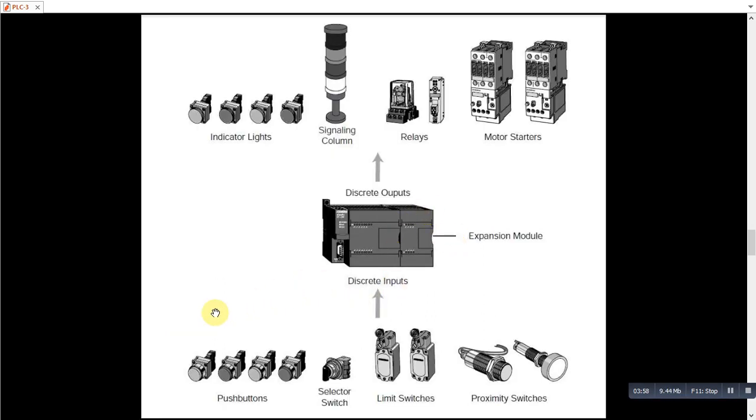So we have in industry various discrete input types. We have push button, we have selector switches, limit switches which are normally installed on control valves. Giving ESD valves like on-off valves giving their close and open status and the proximity switches as well. And then we will be having discrete outputs in which indicator lights are included, signaling column, relays and motor starters.